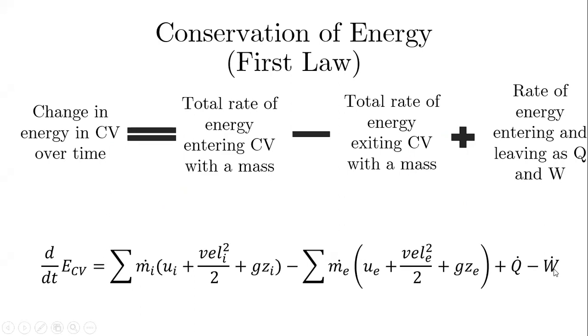So we only accounted for Q and W in the closed system. It's still the same here, meaning that heat and work will still carry energy across the boundaries. But in addition to energy leaving through the boundaries of the control volume, we also have to account for the fact that mass will bring energy with it. The change in energy over time will be the addition of internal energy, kinetic energy, and potential energy from the mass coming in, and we have to subtract the same effects from the mass exiting.